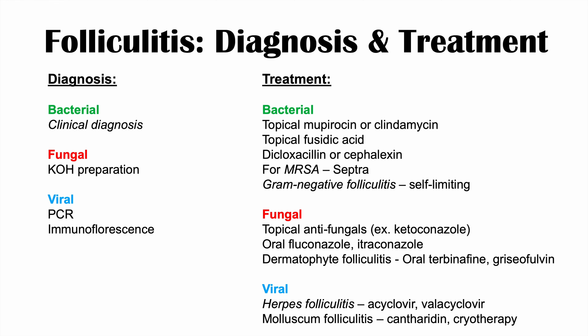To summarize diagnosis and treatment: bacterial folliculitis is a clinical diagnosis; fungal folliculitis can use a KOH preparation; viral folliculitis can use PCR or immunofluorescence. For treatment: bacterial folliculitis uses topical mupirocin, clindamycin, or fusidic acid — for MRSA, use Septra; gram-negative folliculitis is self-limiting with proper hygiene. For fungal folliculitis, use topical antifungals; if those don't work, oral fluconazole or itraconazole. Never use oral ketoconazole due to liver toxicity.